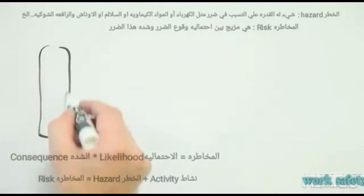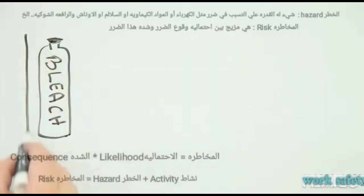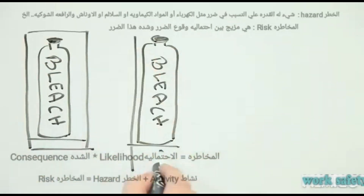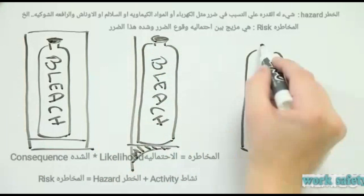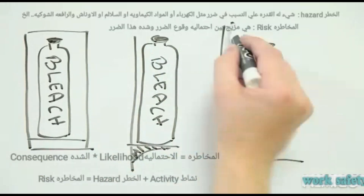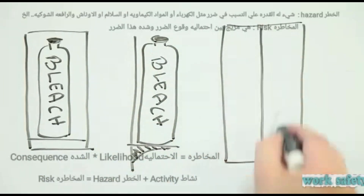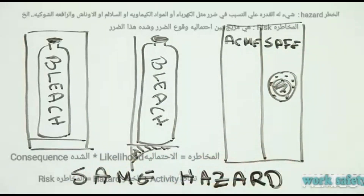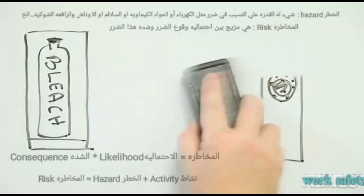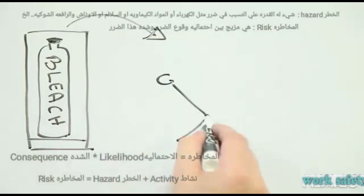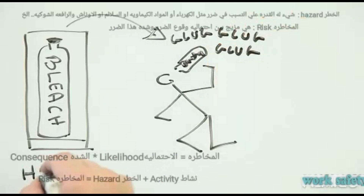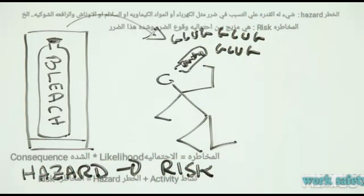Take a bottle of bleach. There's always the possibility of someone doing something stupid with it, but until they do that stupid thing, it's a hazard, not a risk. And whether the bleach is in the cupboard, on a shelf, or locked in an impenetrable vault, the hazard remains. Of course, as soon as someone does do something really stupid, like drink the stuff, there's a real probability of them harming themselves. The hazard is transformed into a risk.